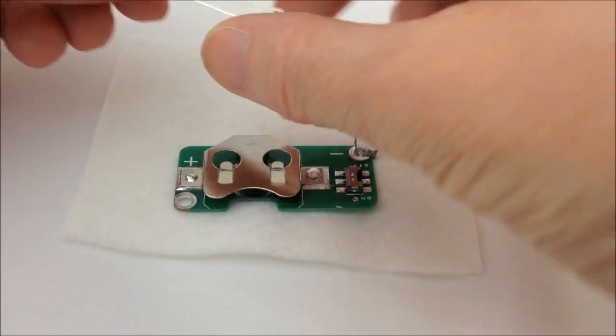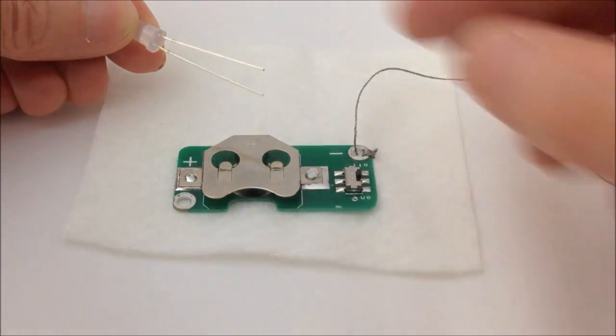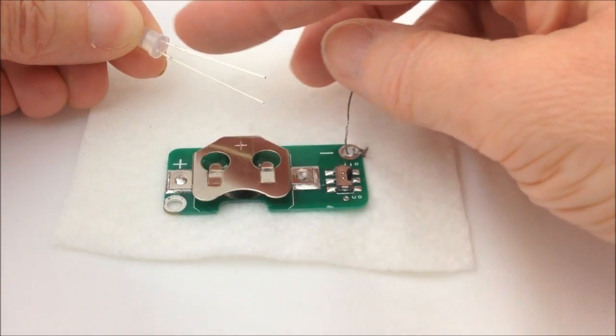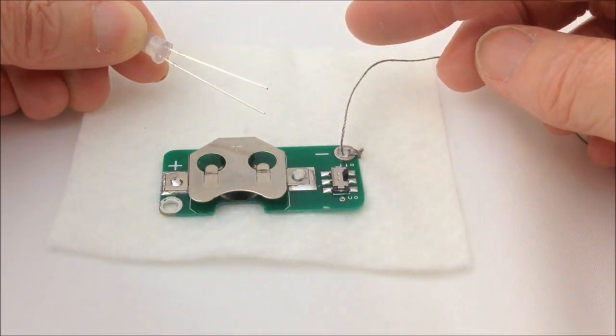So you can identify the negative leg by the fact that it's the shorter one of the two. There's also a flat piece in line with where the negative leg is on the side of the bulb itself.